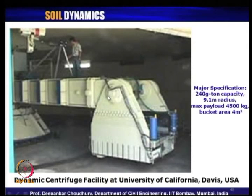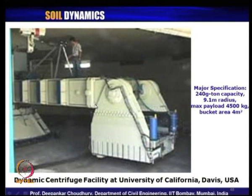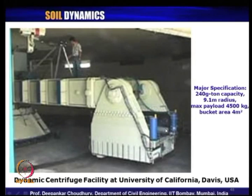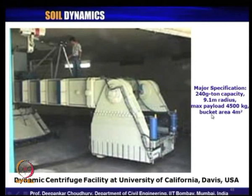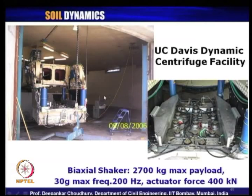The UC Davis centrifuge is the world's largest, and they can also do dynamic testing. In the bucket, when doing dynamic testing, a shaking table arrangement is provided. Other specifications: capacity is 240 G-ton, maximum payload is 4500 kg, and the bucket area is 4 square meters. These interior details were observed during a visit to Berkeley — the testing facilities include a biaxial shaker in the bucket.